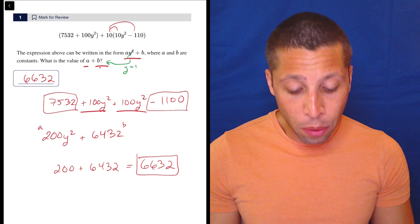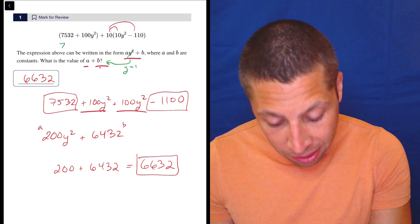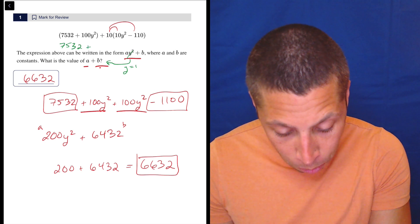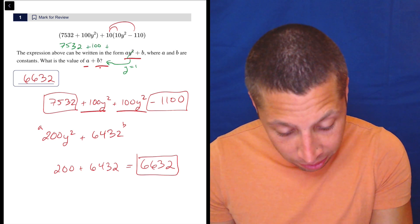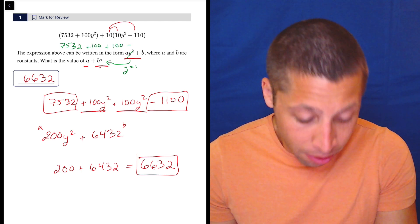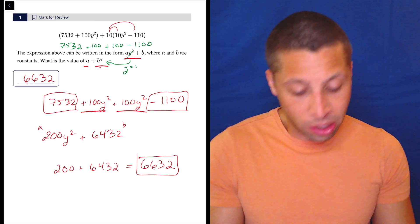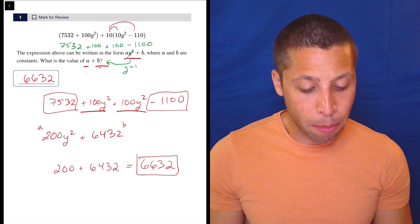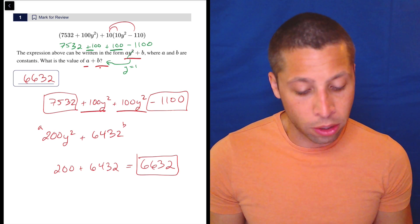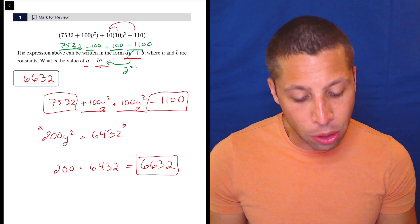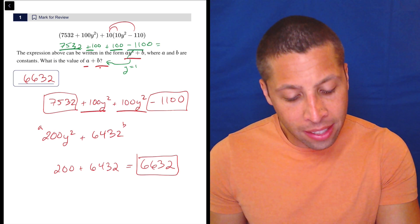So if we were to arithmetize, it would just be 7532 plus 100 plus 10 times 10, which is 100, minus, well, 10 times 110 is 1100. So notice it's the same exact numbers and we end up kind of combining the same things. 100 plus 100 is 200 and then 7532 minus 1100.